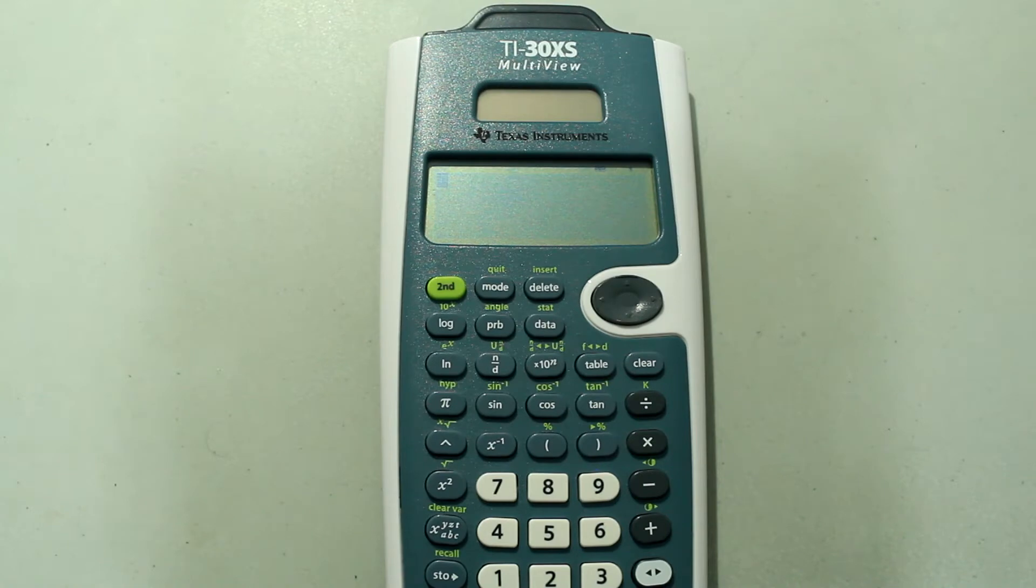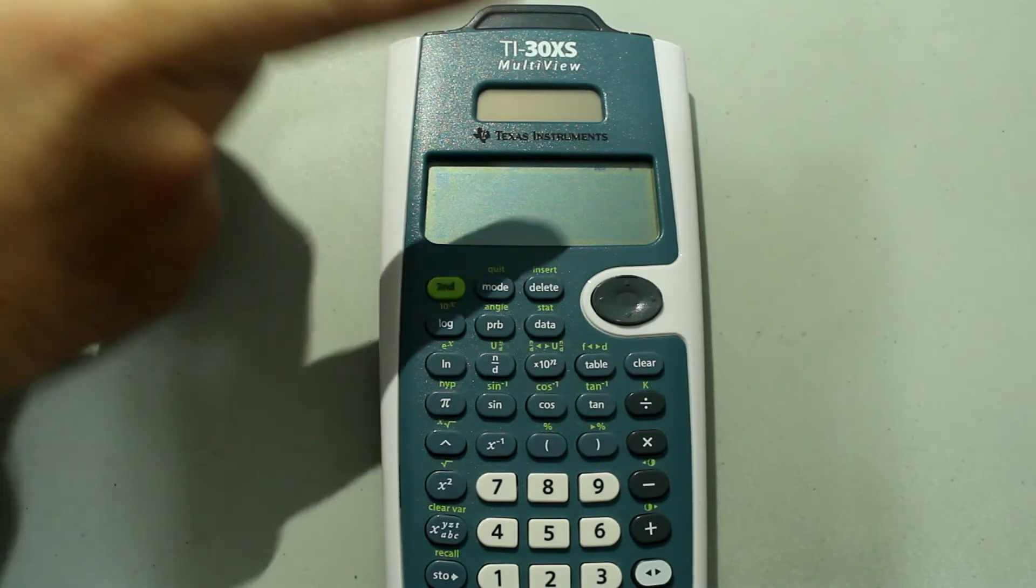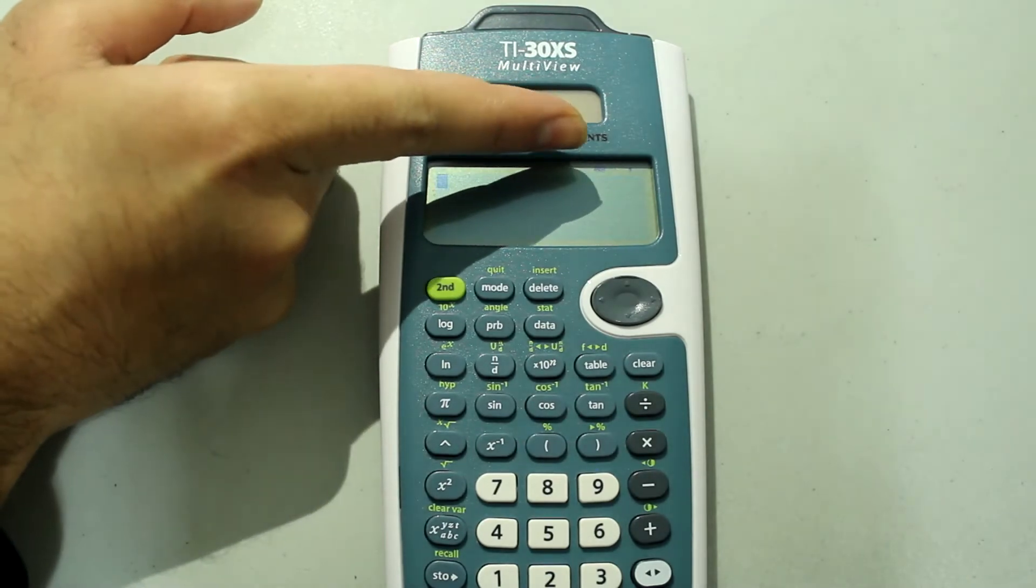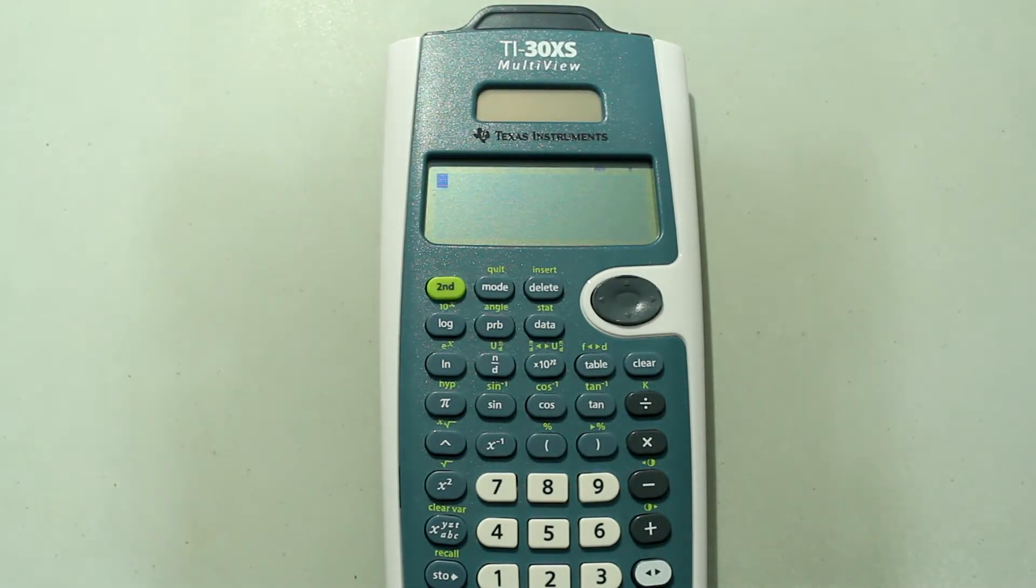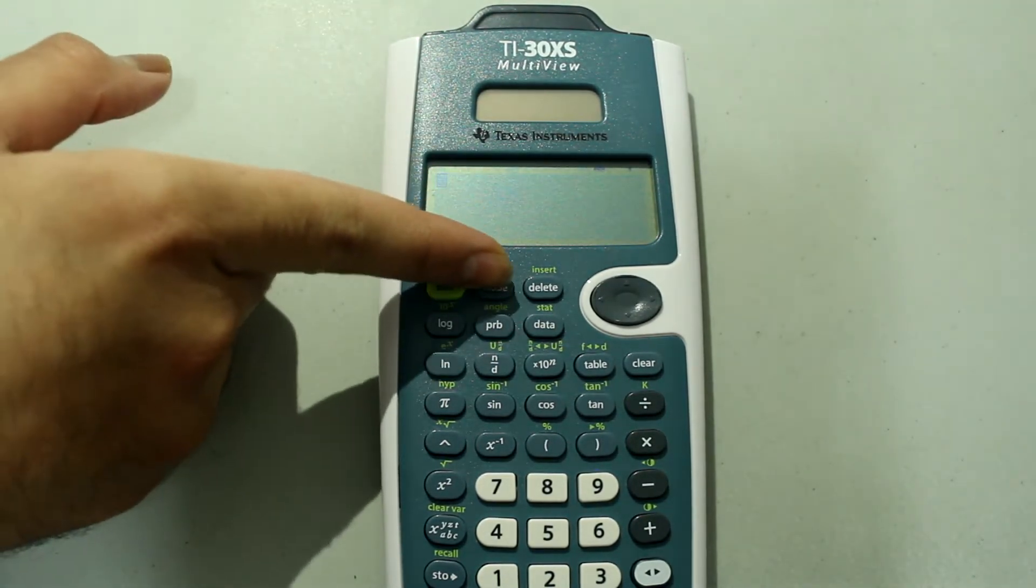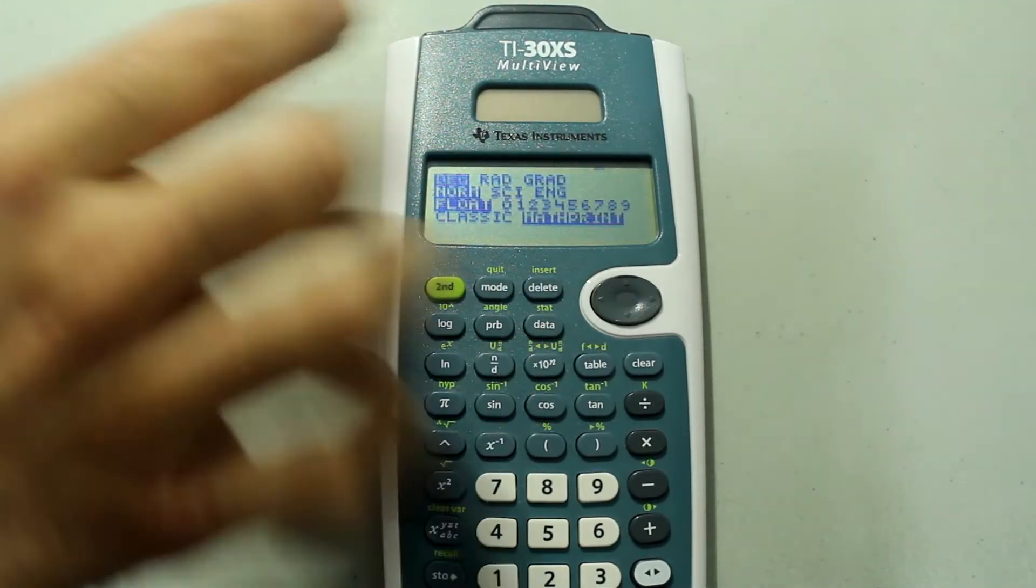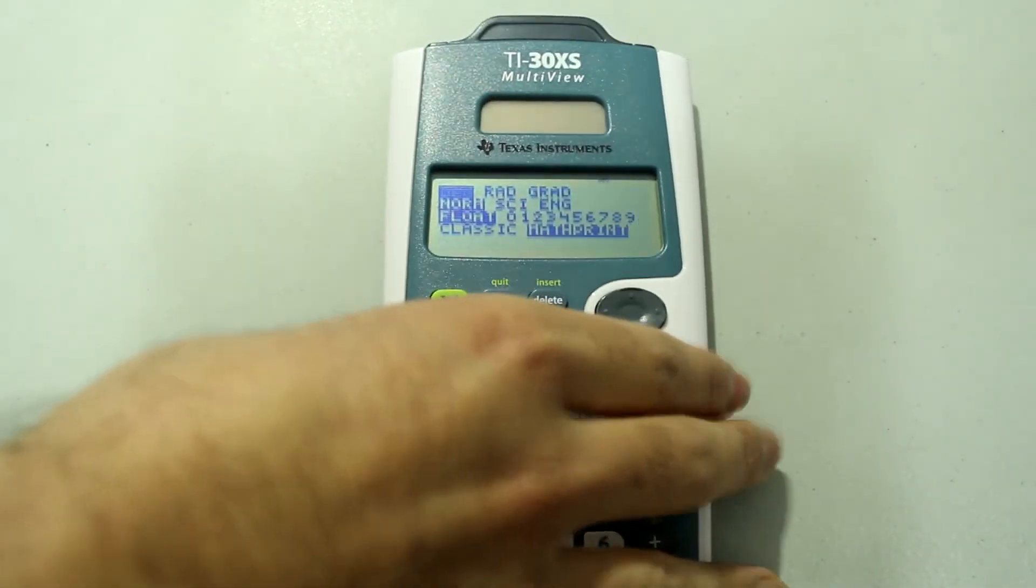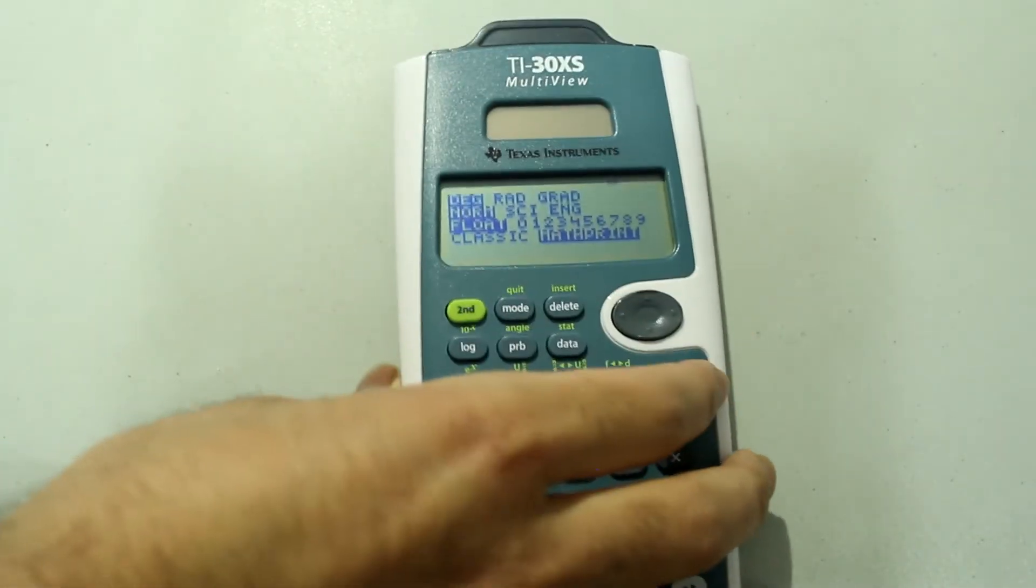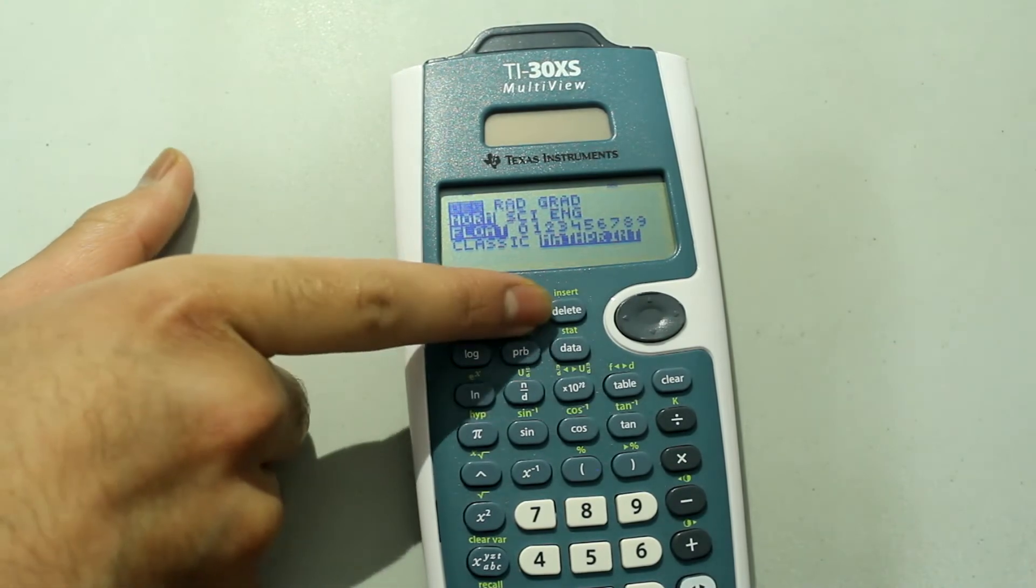First we're going to go from rectangular to polar. So make sure your calculator is in degree mode. It should say DEG at the top right corner. If it doesn't, then go to mode, and then move the cursor around until it's on degrees, and then just press ENTER. In my case, it's already on degrees, so I don't need to do that. So I'm going to just press second mode to quit.